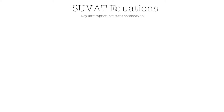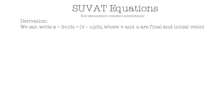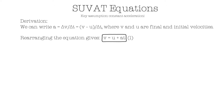Let's go through the derivation of SUVAT equations. As we went through earlier, acceleration is equal to the change in velocity over the change in time. Since we can write the change in velocity, or delta V, as V minus U, the equation can be written as A equals V minus U over delta T, where V and U are the final and initial velocities. If we rearrange the equation so that velocity becomes the subject, we get V equals U plus AT. This is our first SUVAT equation. Pause the video and try this for yourself.